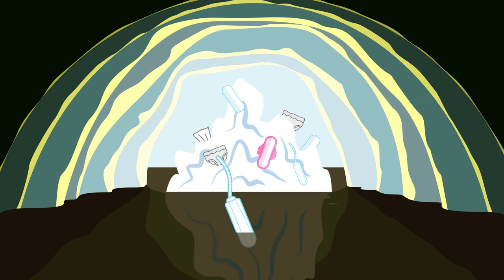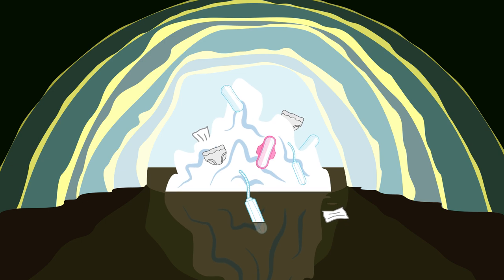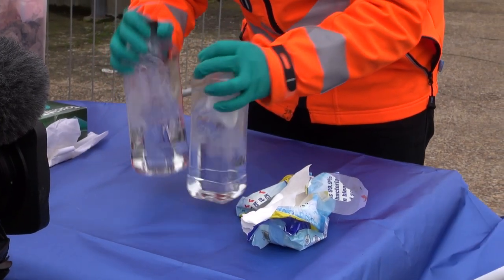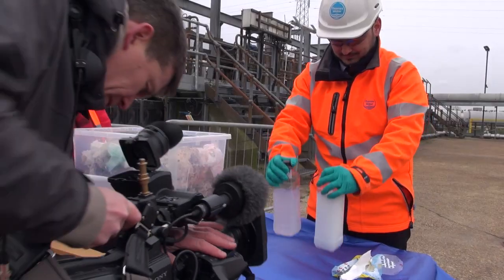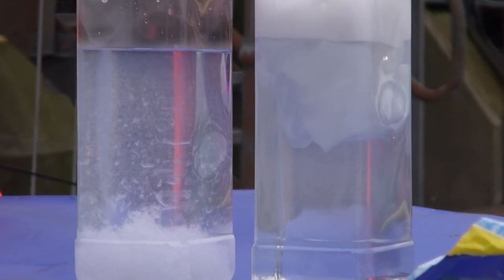These unflushable products are the overriding ingredient in fatbergs and sewer blockages. The Environment Committee recommends banning wet wipes altogether because they're not designed to break down in water like toilet paper.